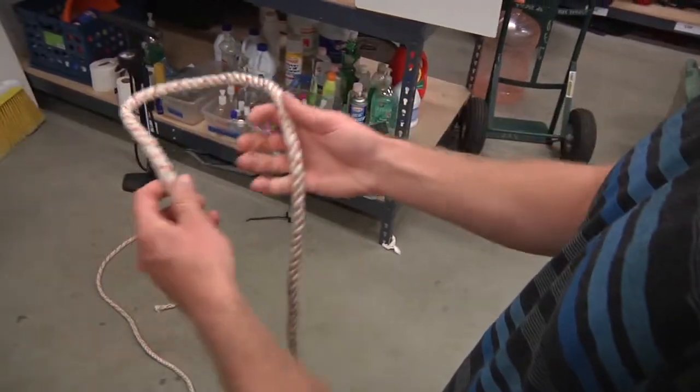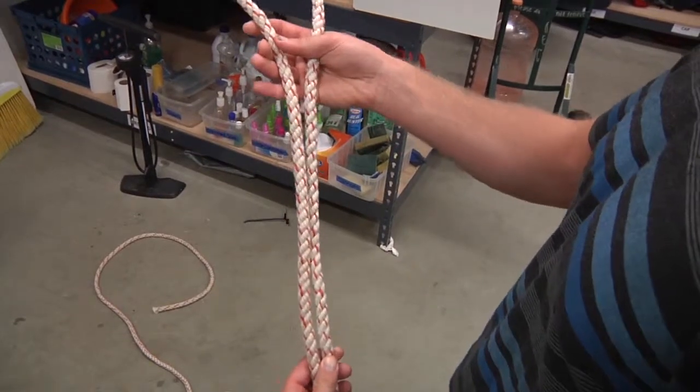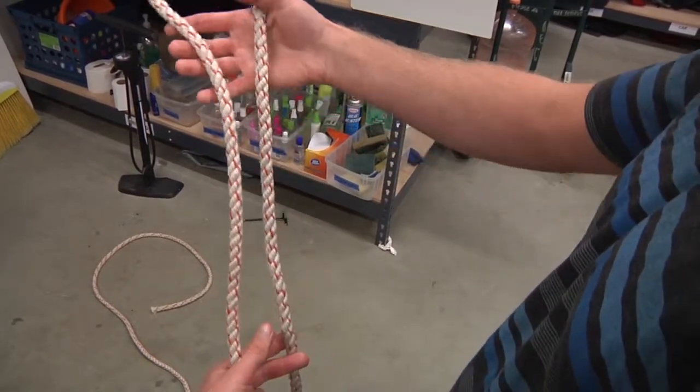So in the middle of the rope, you want to make a big loop. I'm just going to teach you one way to tie it. There are several ways, but this is the easiest. So you have your big loop.